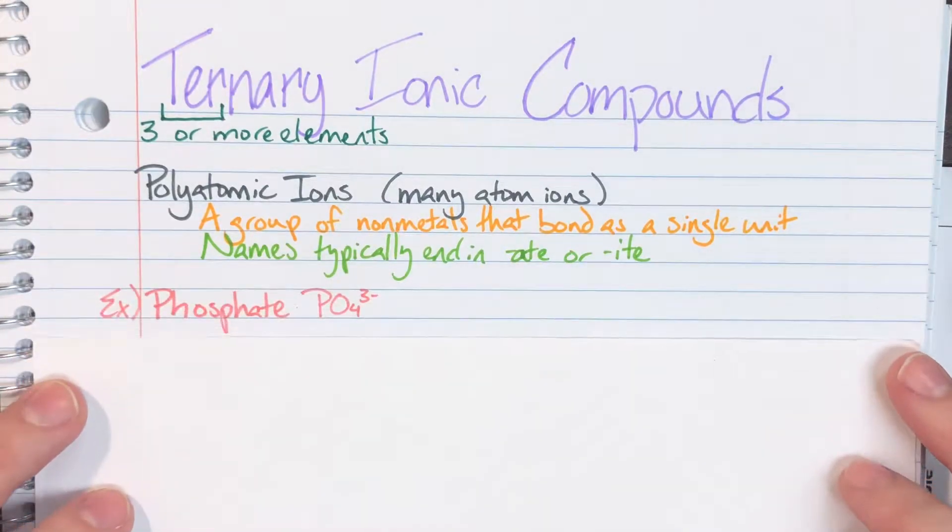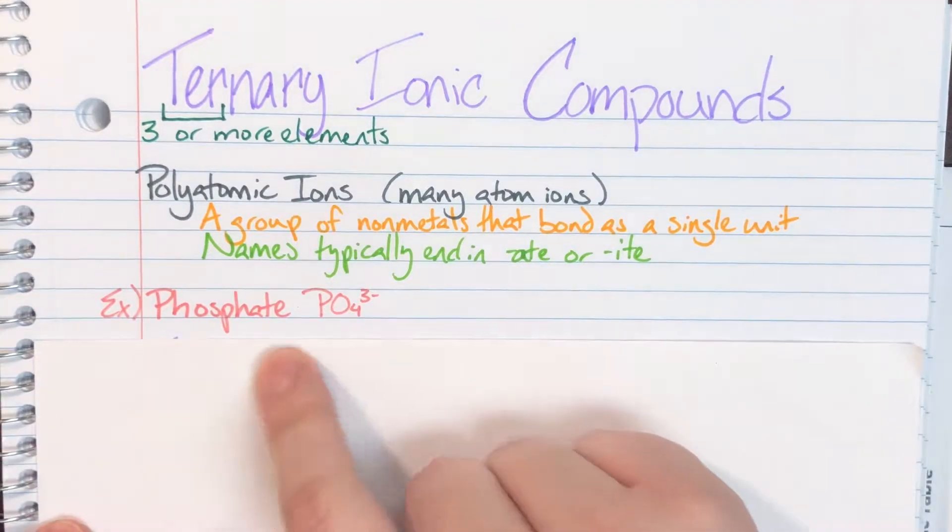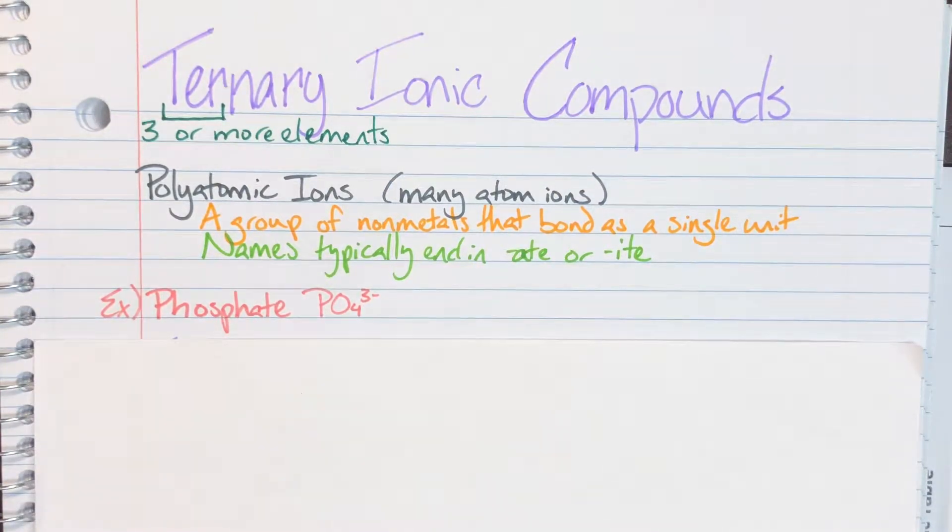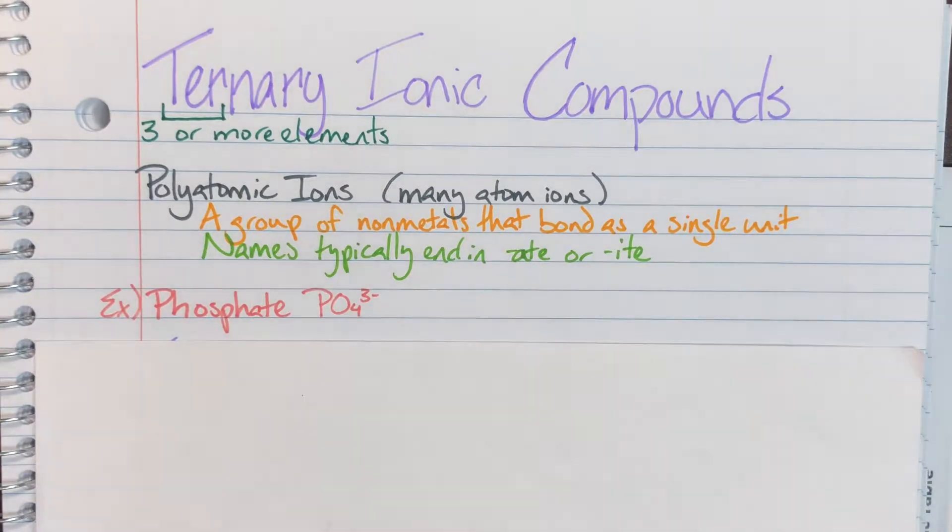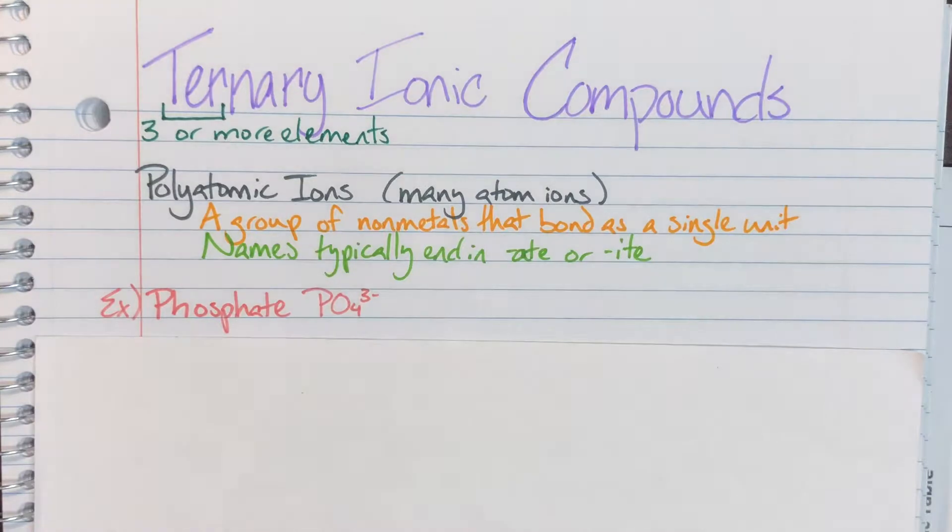So with my polyatomic ions I have a specific example here and this specific example is phosphate. So phosphate has one phosphorus and four oxygens bonded together. Now they are going to form something similar to a ride-or-die group. They are going to stick together no matter what, and they will always have this many of each atom and they will have this charge together, which makes them easy to actually figure out the charges and subscripts because they're going to stay together.